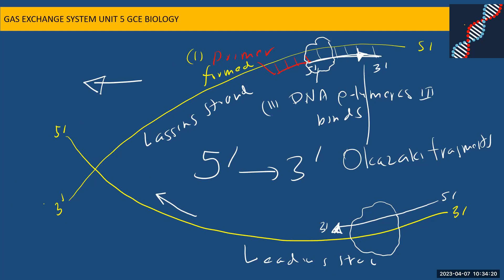It keeps the same rule for the lagging strand as well. It is again growing in the 5' to 3' direction and adding nucleotides to the 3' position. So it is growing in this direction.